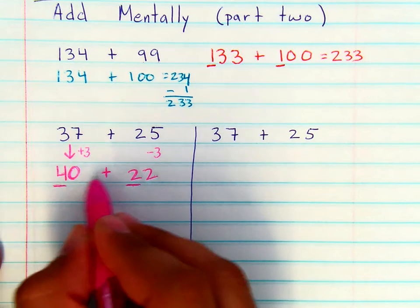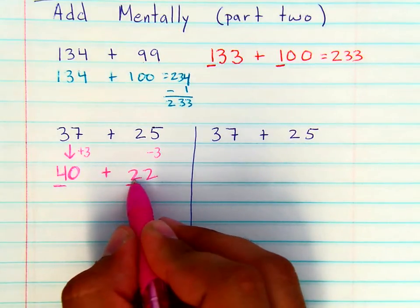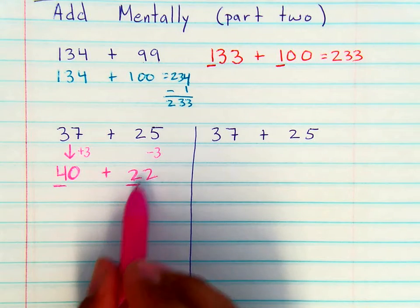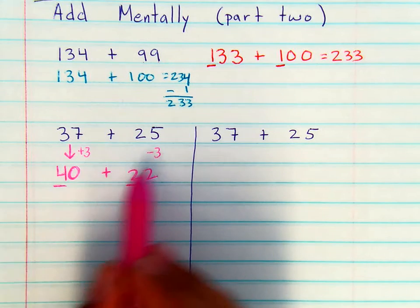22 plus 40 is 22, 32, 42, 52, 62. So that makes it easier if you think of the numbers, if you add 3 to one side and take away 3 from the other.